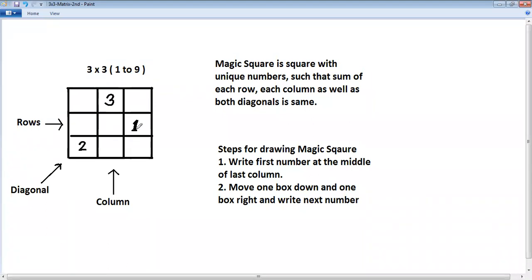Continue down, right. The second situation: when you move down, right and box is already occupied, next number you should write left of current. So second rule says when you move down, right box is occupied, next number left of current.